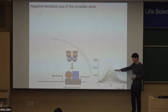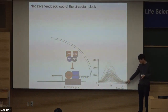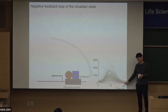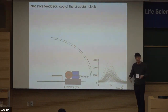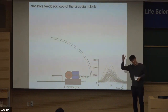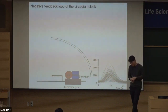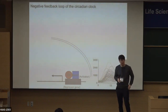Then the period protein degrades for 12 hours. When it becomes 24 hours, all the period protein has disappeared from the cell, so that inhibition is released. Now we can reproduce the period protein for 12 hours and then decay for 12 hours. That happens every day in your brain — that's the key mechanism for generating 24-hour rhythms in our body.